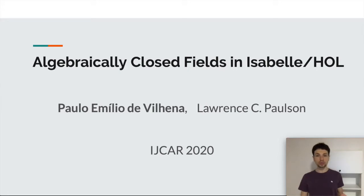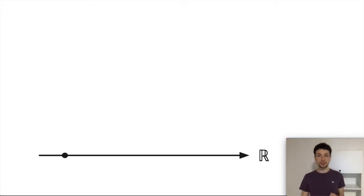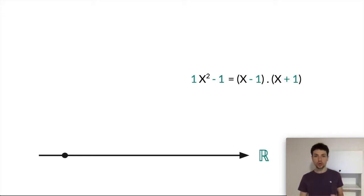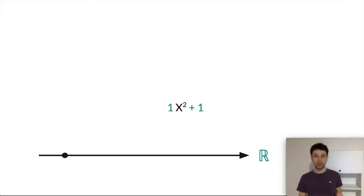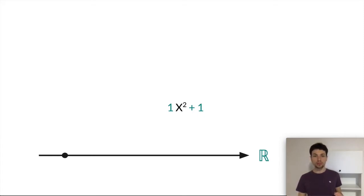So what is an algebraically closed field? Let's start with the field of real numbers and take a polynomial x squared minus one. It's a polynomial with both of its coefficients in the real line, and moreover it has two roots, one and minus one, both real roots. But this property of having roots in the real line is not true for all polynomials. For example, the polynomial x squared plus one has no root in the field of real numbers. So if we want a root for this polynomial, we would have to extend R with this imaginary unit i and impose it to satisfy the property of being a root of x squared plus one.